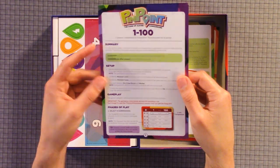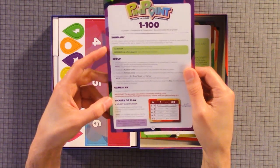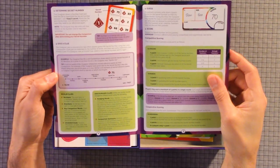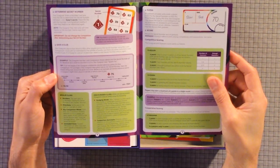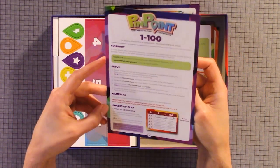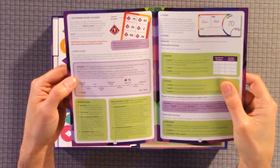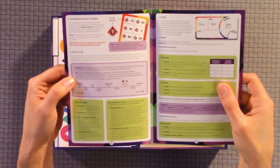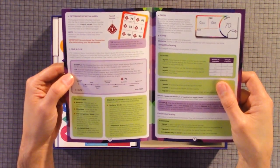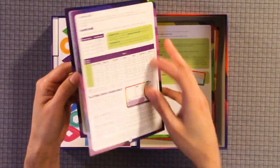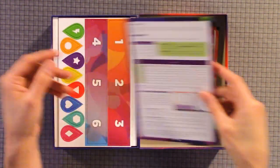So one to one hundred, we have summary setup, gameplay, basis of play. Give a clue. So first you select a comparison. Then you determine secret number, give a clue, guess, score, and then there's a cooperative scoring, round end, game end.